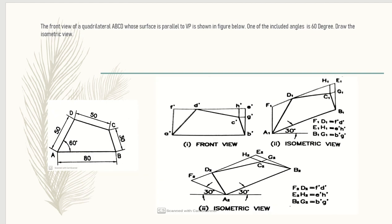Moving on to another question: the front view of quadrilateral ABCD whose surface is parallel to VP is shown in the figure below. One of the included angles is 60 degrees — draw the isometric view. This is the figure given to you: 60-degree inclination is there, all other sides are given, and this is a quadrilateral. First, enclose it in a rectangle such that it passes through all the corners. You can see the front view enclosed with a rectangle.